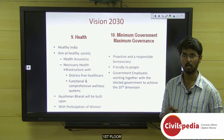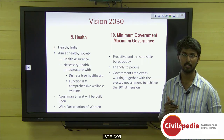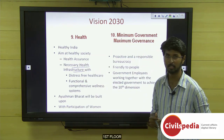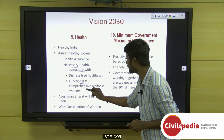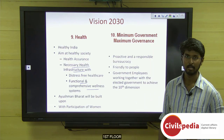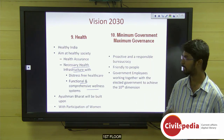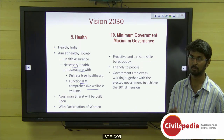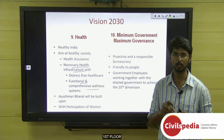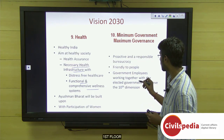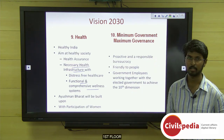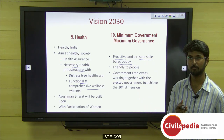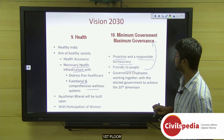The ninth dimension is health. The government has come up with the Ayushman Bharat program, focusing on building health infrastructure with distress-free healthcare and a comprehensive wellness system, with women's participation included. The tenth dimension is minimum government, maximum governance — government employees working cohesively at center and state levels, being proactive, responsible, and people-friendly, thereby achieving this goal.